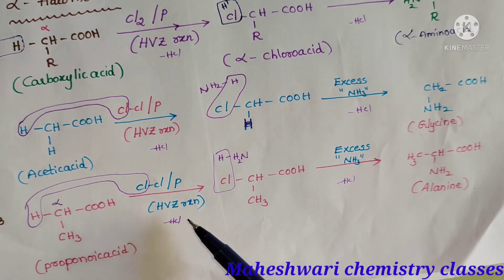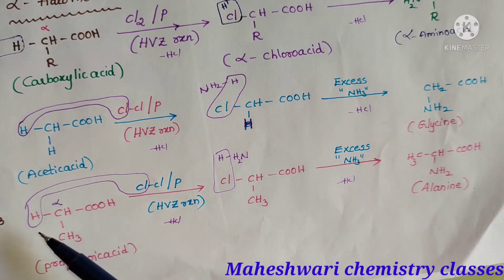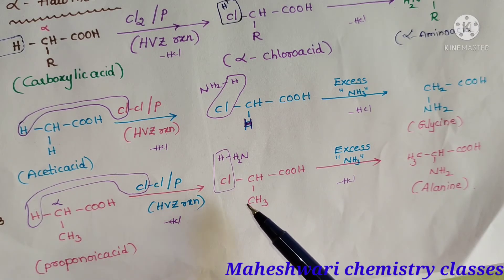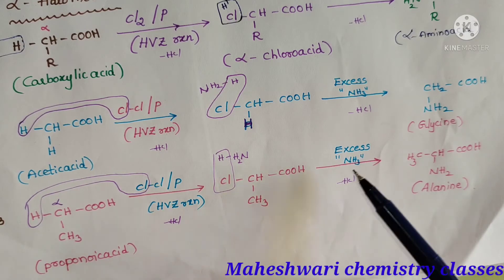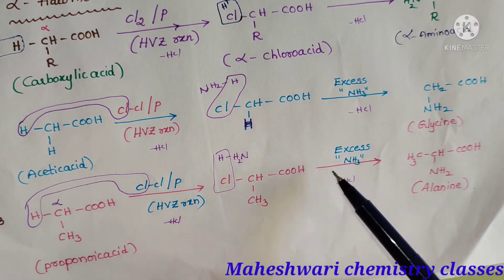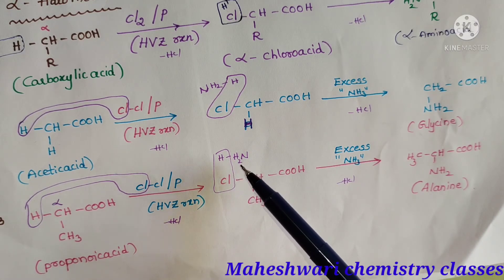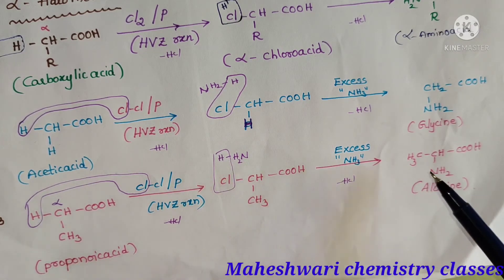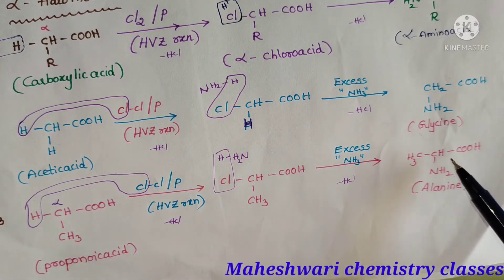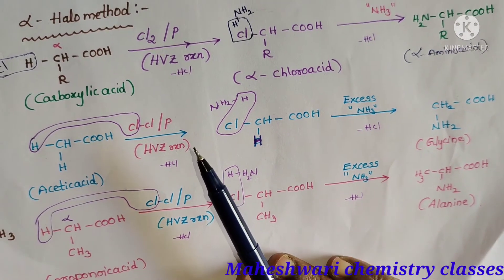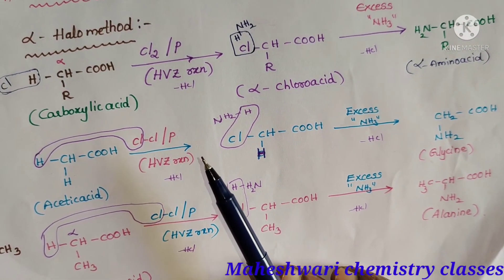This reaction is the HVZ reaction — the Hell-Volhard-Zelinsky reaction — where hydrogen and Cl are both eliminated as HCl and chlorine is substituted, forming alpha chloro acid. Again it reacts with excess ammonia: NH3 (written as NH2 and H for convenience), HCl is eliminated, and in place of chlorine, NH2 is substituted, forming CH3-CH(NH2)-COOH, which is alanine. This is the alpha halo method for preparation of amino acids.